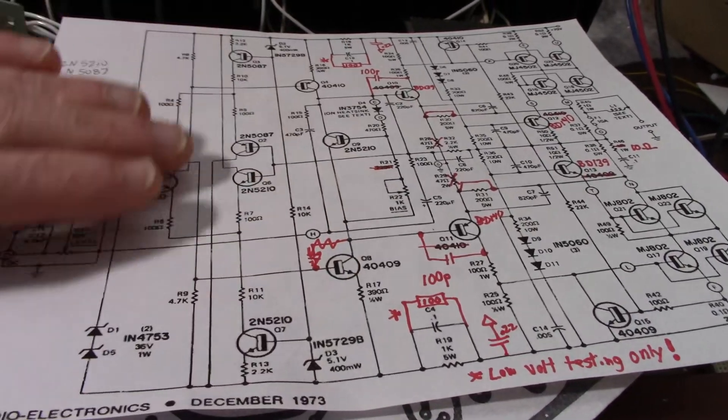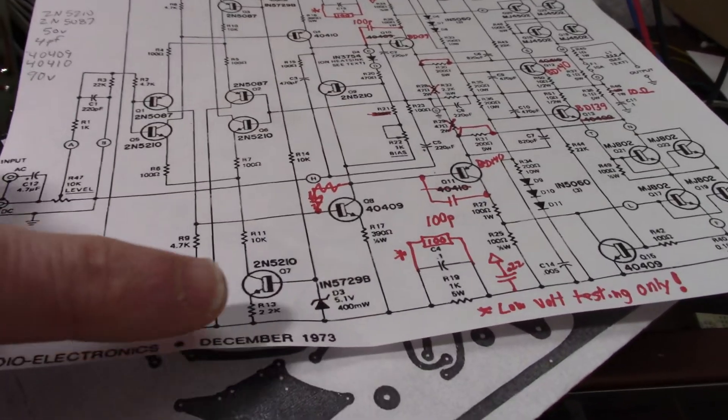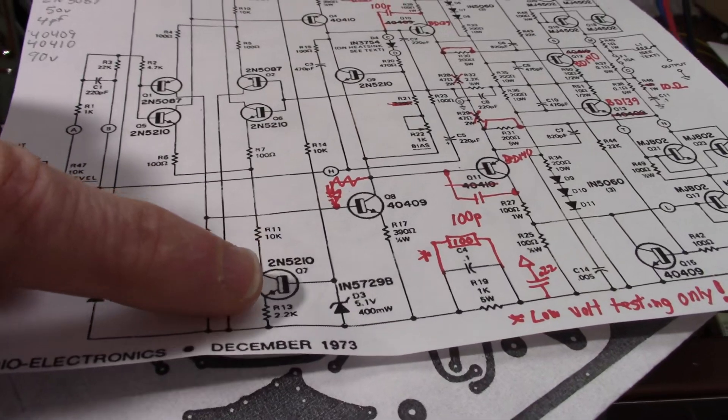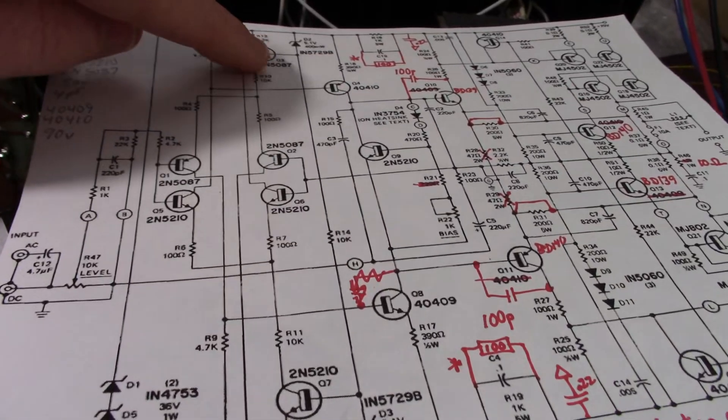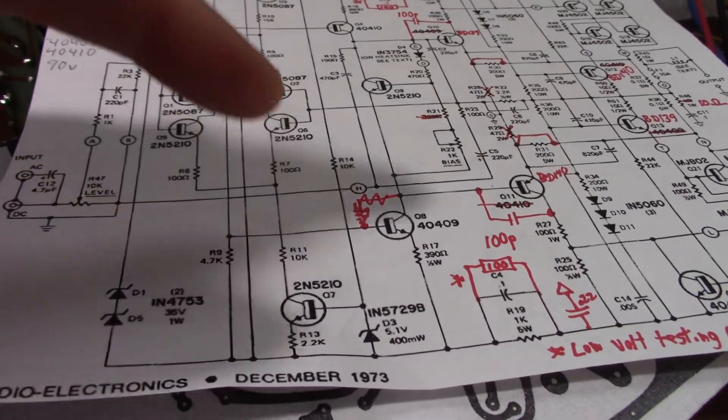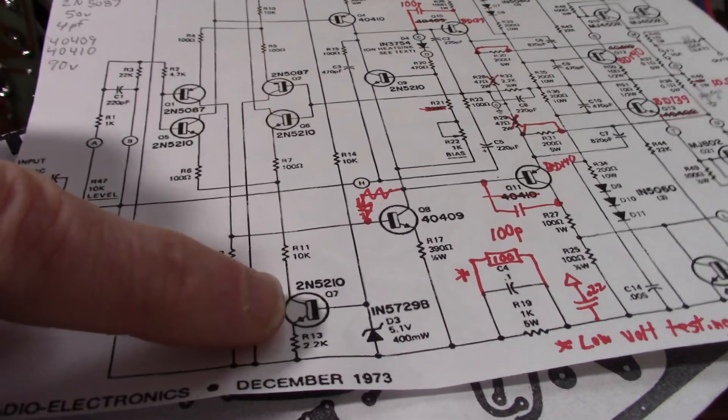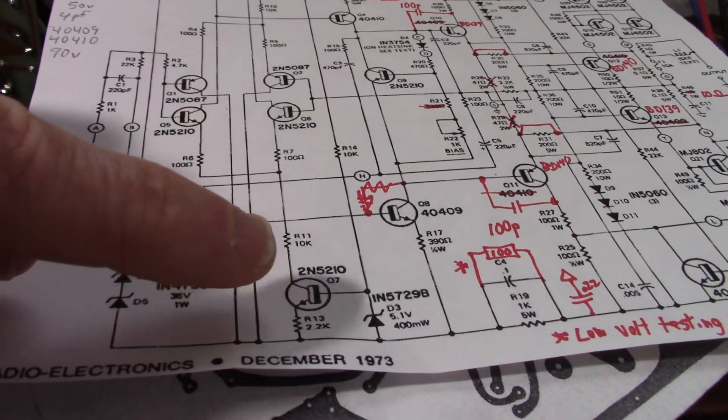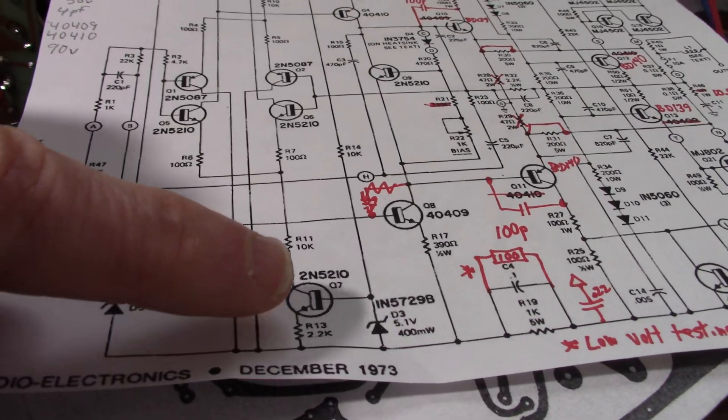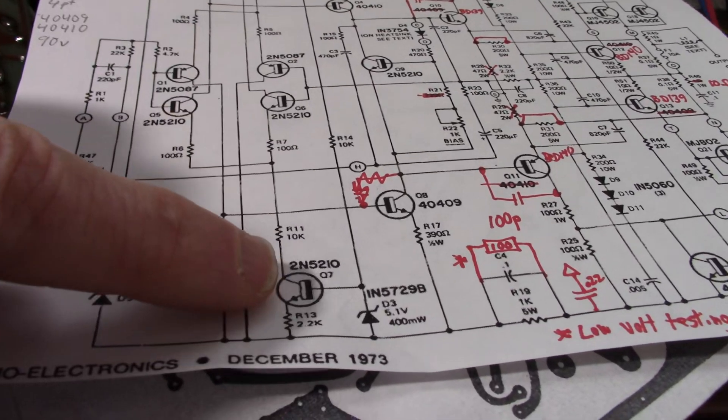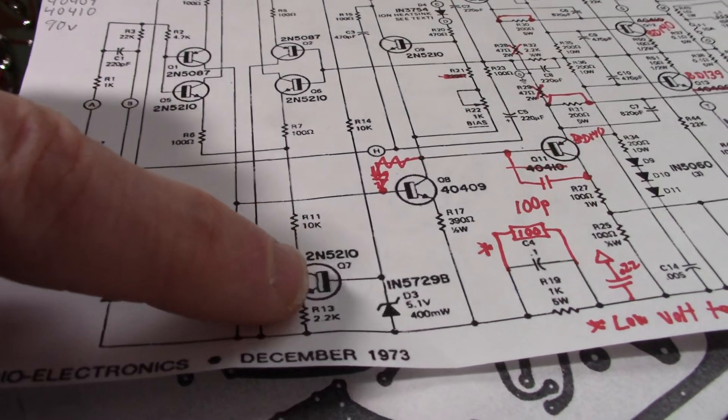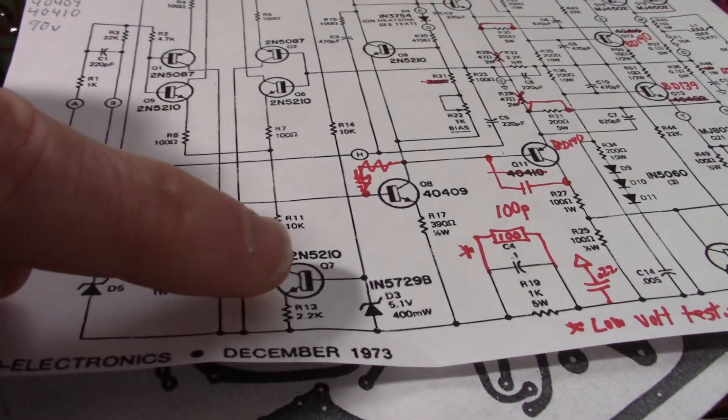So, I have to replace all those transistors because, for example, these current sources, there would be 45 volts across it. I'm just kind of calculating in my head, looking at it, if I use plus or minus 70 volt rails. These are 50 volt transistors. So, that's barely within limits. I could leave them in, but I'll change them anyway.